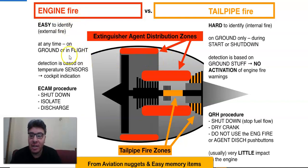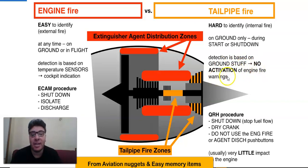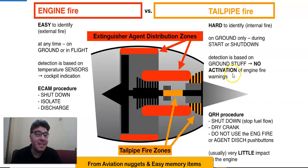Engine fire detection is based on temperature sensors or fire detection loops, which give you a cockpit indication. Tailpipe fire detection is based on a visual report from ground staff mainly, with no activation of an engine fire warning in the cockpit. However, if you are a good pilot, you will notice a rapid EGT rise on the ECAM or your display. A rapid EGT rise may be an indication of tailpipe fire, but keep in mind the main indication remains a visual report from ground staff, cabin crew, or the tower.